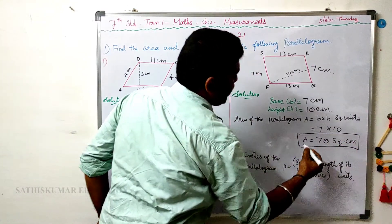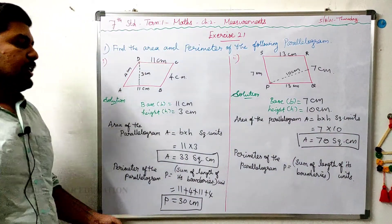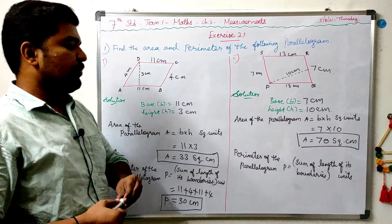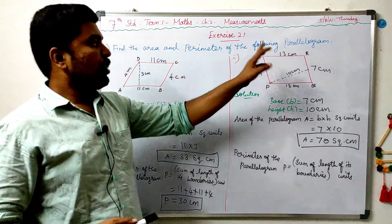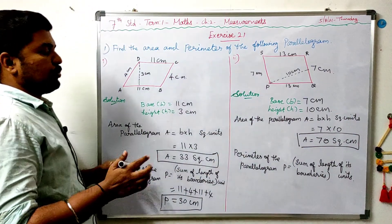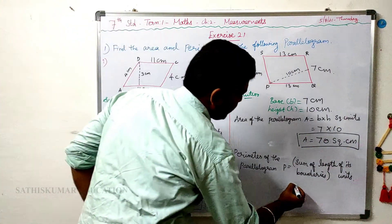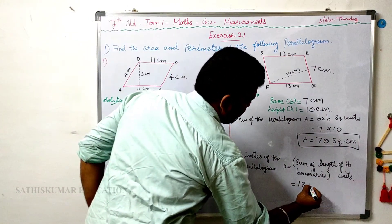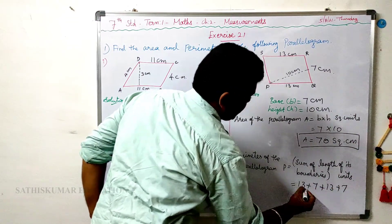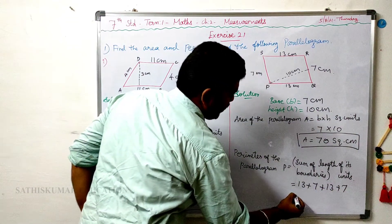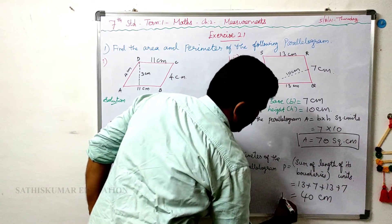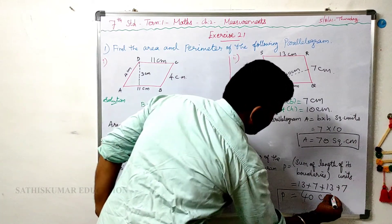This is the area of the parallelogram. And next, perimeter of the parallelogram — as usual, the sum of the lengths of its boundaries. So the perimeter is 13 plus 7 plus 13 plus 7. 13 plus 7 is 20, and 20 plus 20 is 40cm. Perimeter P is equal to 40 centimeters.